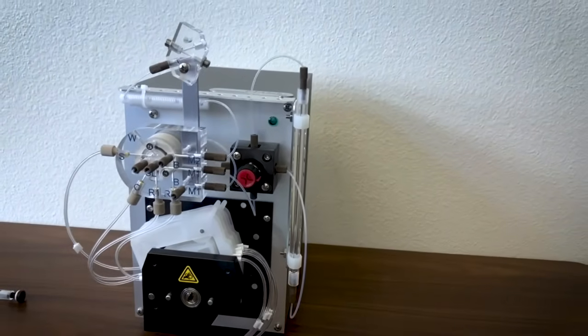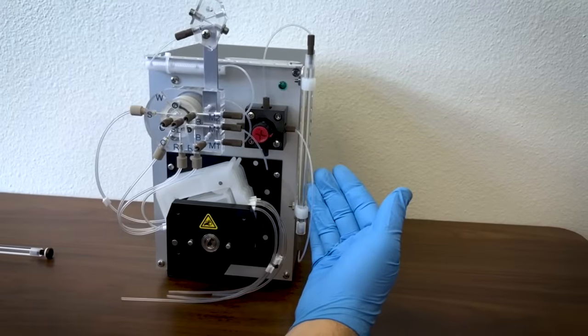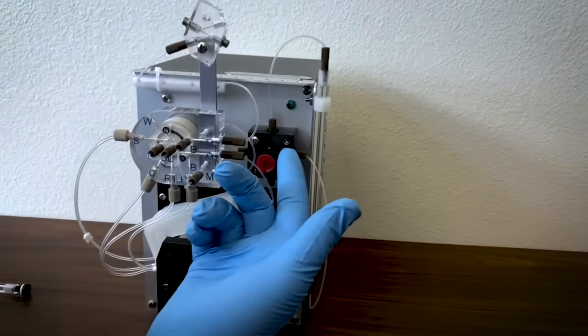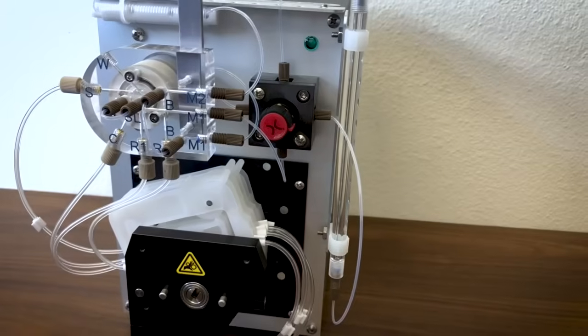This is how a FIAlab column looks installed on an instrument. Before starting, ensure the switching valve is in the off position. Be sure to wear gloves throughout the process and clean any drips with a damp paper towel or Kimwipe.